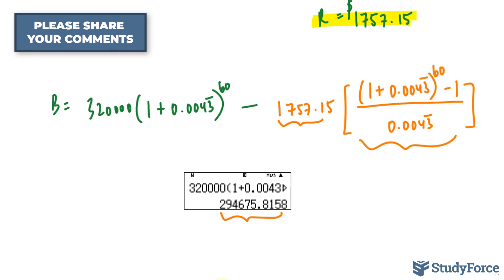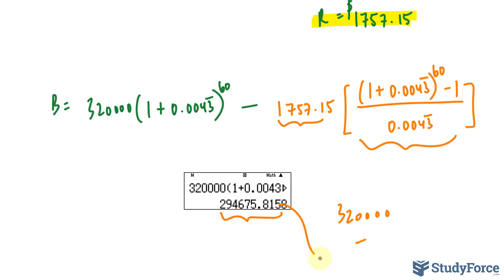You can even take this a step further by subtracting this from 320,000. And what you get is how much has been paid towards the principal in 5 years.